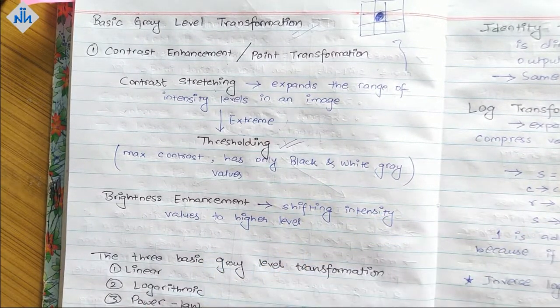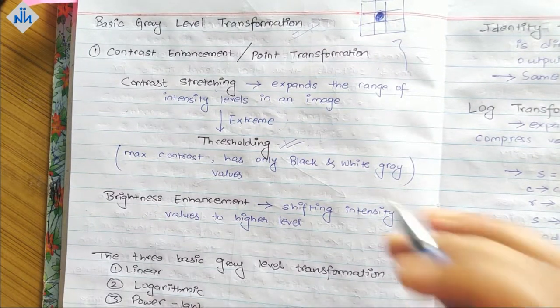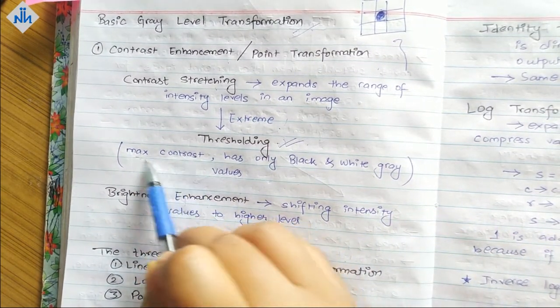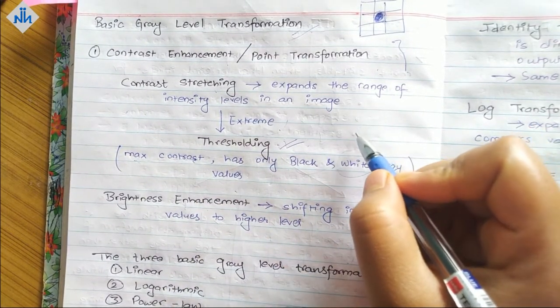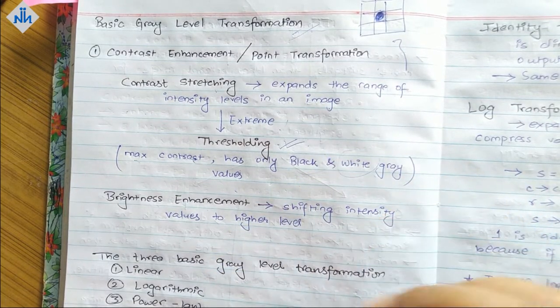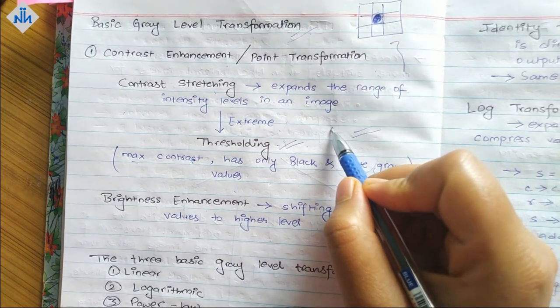At the end when we have maximum contrast, it has only black and white gray values. Your image will be totally transformed into a black and white image and there will be no values in between. It will be either 0 or 255. That is what thresholding means.